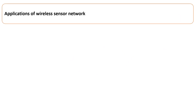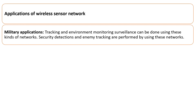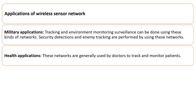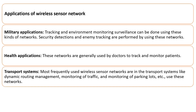Coming to the applications of a wireless sensor network, WSNs were first developed for military applications where tracking, environment monitoring, and surveillance can be done. Security detections and enemy tracking are performed by these networks. Later, WSNs became used for health applications, where doctors use them for tracking, and in transport systems for dynamic routing management, monitoring of traffic, and monitoring of parking lots.